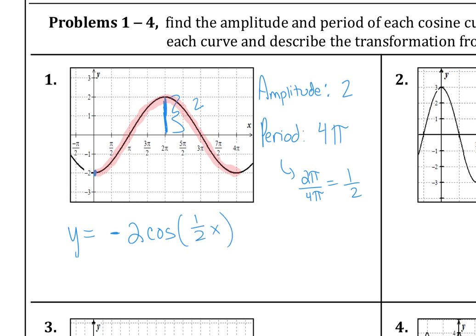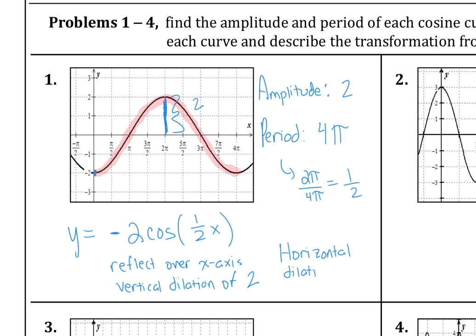Describing the transformations: it's reflected over the x-axis, has a vertical dilation of 2, and also a horizontal dilation. Because one half is in our function, the horizontal dilation is by a factor of 2 — remember it's the reciprocal.